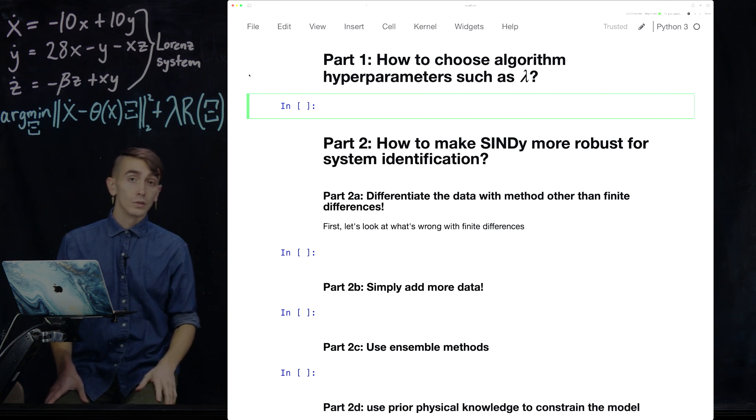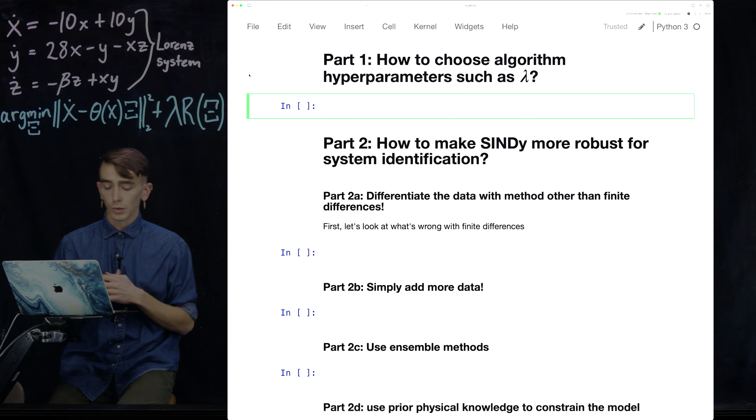And so a natural question that comes up, which I'm going to be addressing in this hopefully quick video, is how to choose algorithm hyperparameters like lambda. So this will be useful for using PySINDy. But actually, what I'm going to be telling you here is sort of a generic technique for choosing these hyperparameters that appear in machine learning techniques. So let's jump in. I've already loaded in some Lorenz data. I'm going to define the feature names in the Lorenz system, so X, Y, and Z.